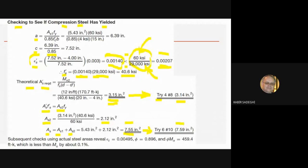Subsequent checks using actual steel reveal epsilon_t equals another value, phi equals another value, and phi × Mn is less than Mu by about 0.1% — far more accurate than needed. In engineering, 2% is acceptable. We have now finished the doubly reinforced concrete beam section; serviceability will be covered in Chapter 6.